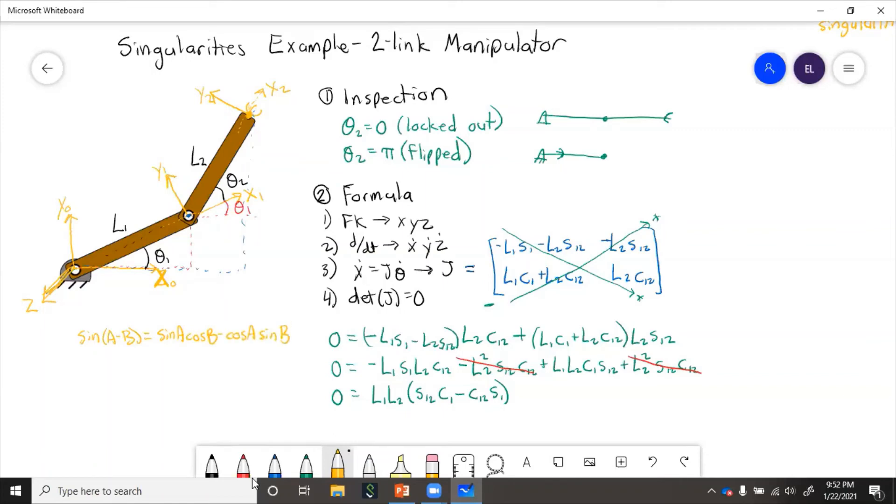So here a is theta one plus theta two. And b equals theta one.